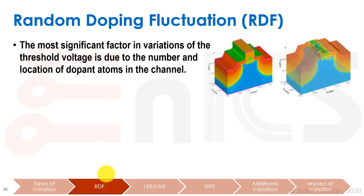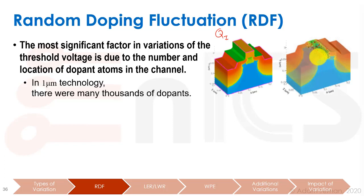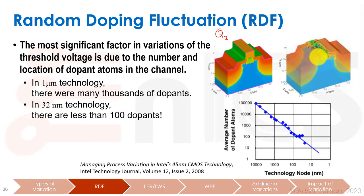The first variation I'll go into is random dopant fluctuation, or RDF. It has been the most significant factor in variations of the threshold voltage, because of QI, the implant charge that goes into the channel. You can see these 3D plots showing the density of implants inside the channel — there is not an infinite number of implants; you could almost count them. In older technologies such as 1 micron technology there were thousands of dopants, but as we scaled we put fewer dopants inside the channel. In 32 nm technology, already quite old today, there were less than 100 dopants — fewer than 100 atoms in a channel — so there is a lot of variation.